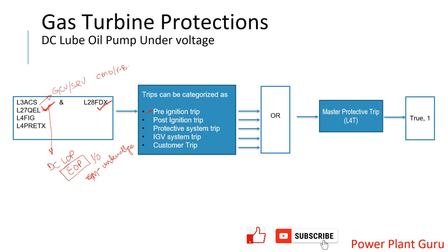Another signal is L4FIG — this is failure to ignite. During the start sequence, a command is sent to the spark plug to initiate ignition. L2F is the firing timer associated with this check.